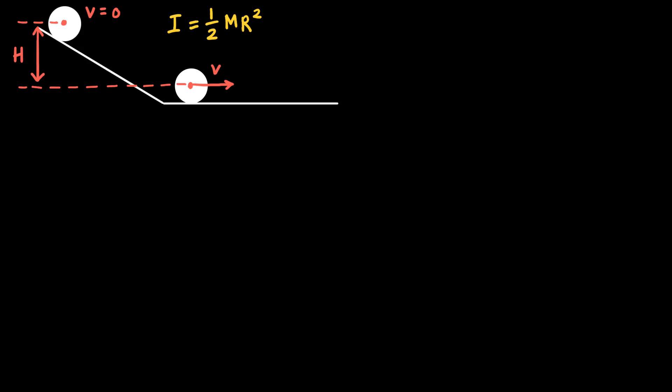In this video, I'm going to solve a rotational motion problem using conservation of energy. We have a solid cylinder with a mass m and radius r that has a moment of inertia that's equal to 1 half mr squared.